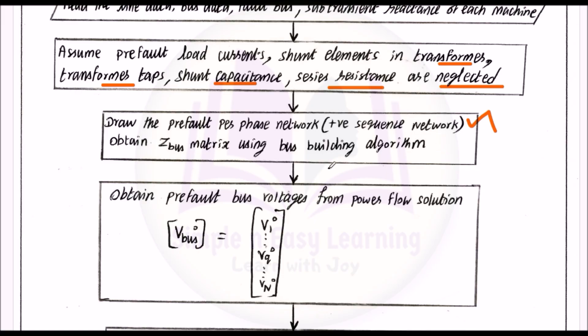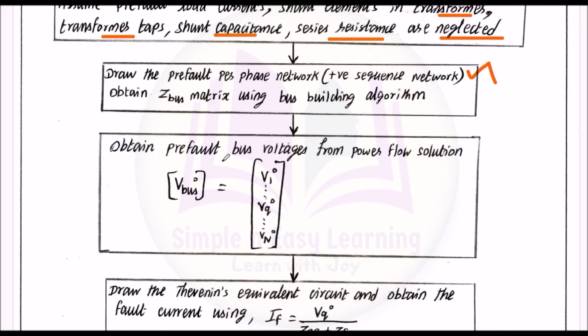Step 4: Obtain pre-fault bus voltages from the power flow solution. For each bus except the slack bus, determine the pre-fault bus voltages V1, V2, V3, up to Vn.